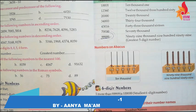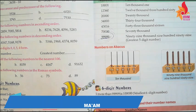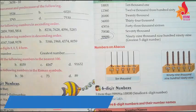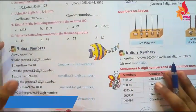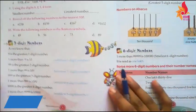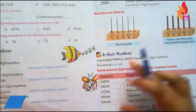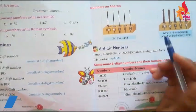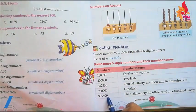If a seven-digit number exists, it is 1,00,00,000. This way we can write down numbers. The first topic is five-digit numbers, and a six-digit number begins at one, ten, hundred, thousand, ten thousand, ten lakh.